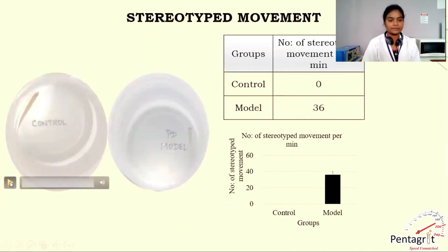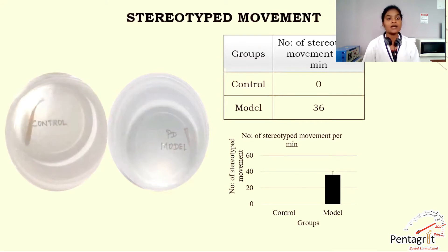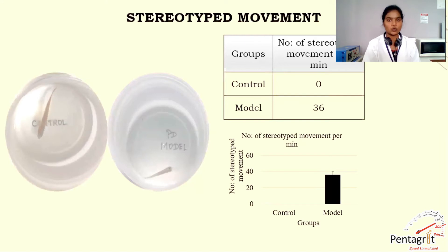Next is stereotype movement. Stereotype movement is repetitive, purposeless movement. It is one of the aggressive or repeated movement symptoms in the Parkinson's model, occurring in advanced stages. The fish is introduced into the experimental tank and the number of stereotype movements occurring in a fish for one minute is counted after an adaptation period of one minute. On the screen, the graph shows the number of stereotype movements between control and model — the model shows a stereotyped pattern of behavior, which is one of the phenotype biomarkers.